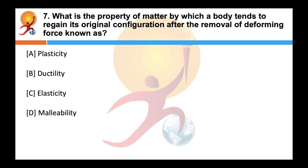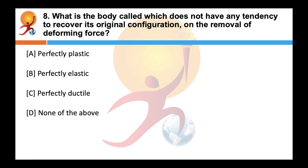What is the property of matter by which a body tends to regain its original configuration after the removal of a deforming force? Correct answer is C — elasticity. Exactly opposite is plasticity — it is the property of matter by virtue of which a body does not regain its original shape and size after the removal of a deforming force. A perfectly plastic body does not have any tendency to recover its original configuration. Paraffin wax and wet clay are the closest examples of a perfectly plastic body.